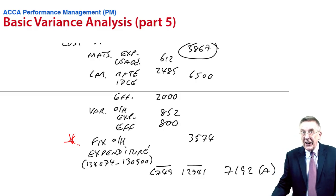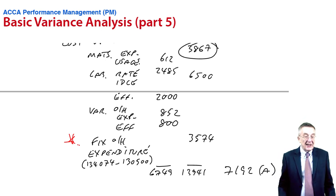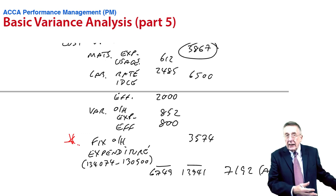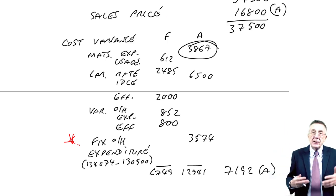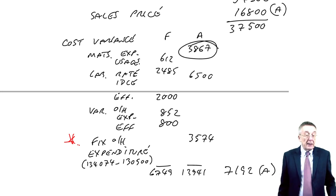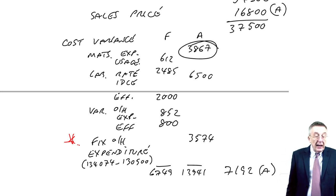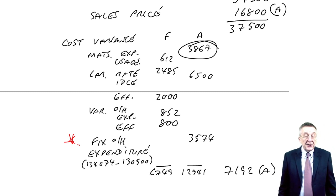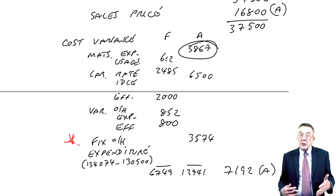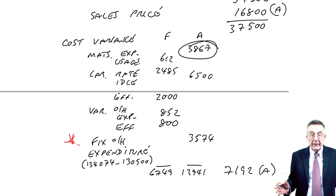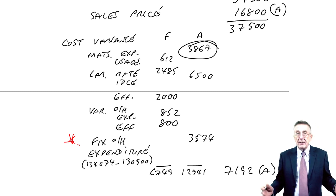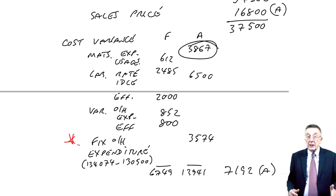This is the very last lecture on basic variances. We did example one, all the variances assuming they're using absorption costing. Example two asked us to analyze them and produce an operating statement. Example three asked us to do it all again using marginal costing. I didn't bother preparing the original fixed budgets, it would be a waste of time, but we did the operating statement using marginal.